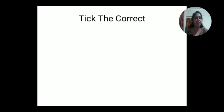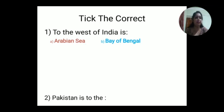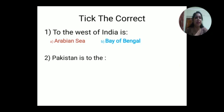Now we will do tick the correct. To the west of India is - Arabian Sea or Bay of Bengal? The answer is Arabian Sea. To the west of India, there is the Arabian Sea. Pakistan is to the east of India or west of India? Pakistan is to the west of India. The correct answer is west of India.